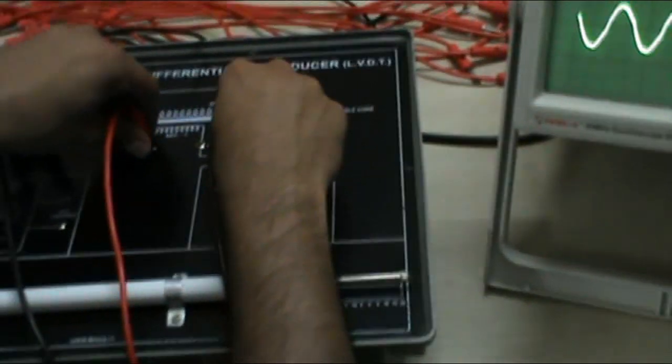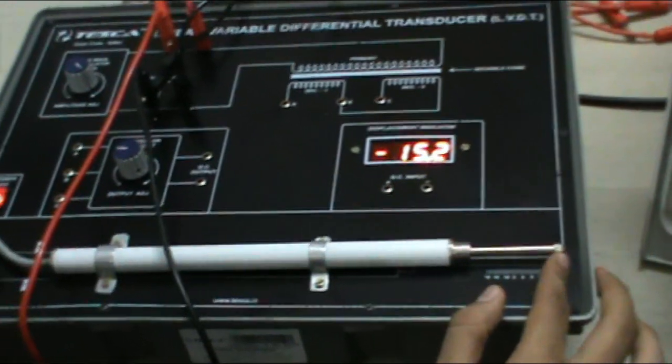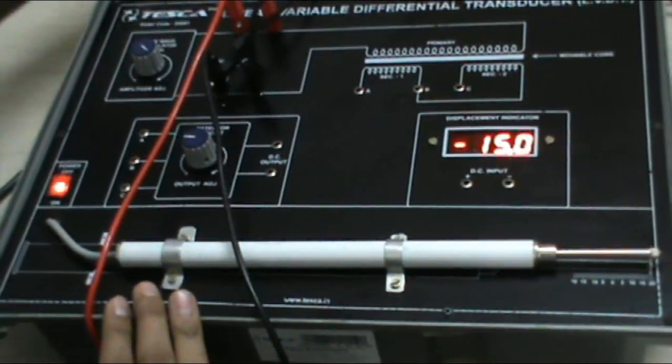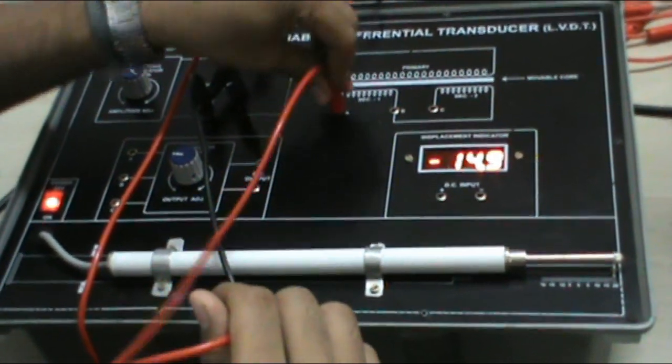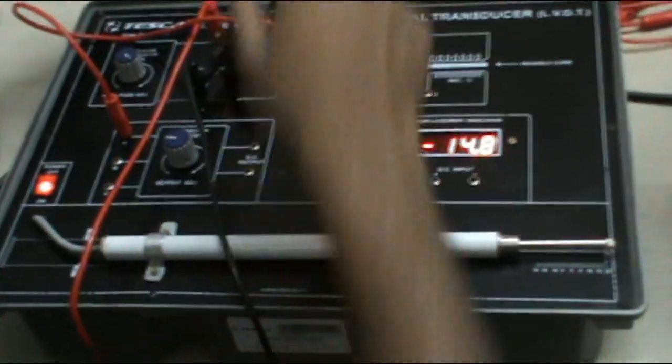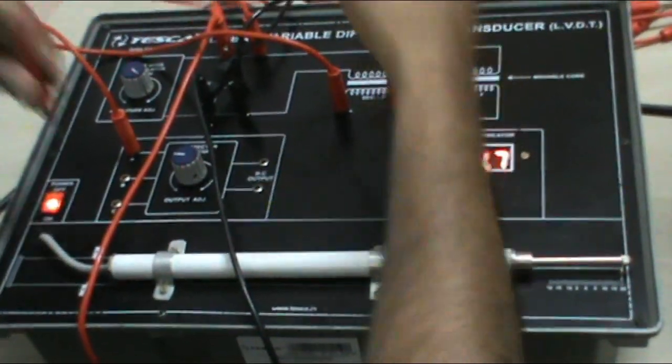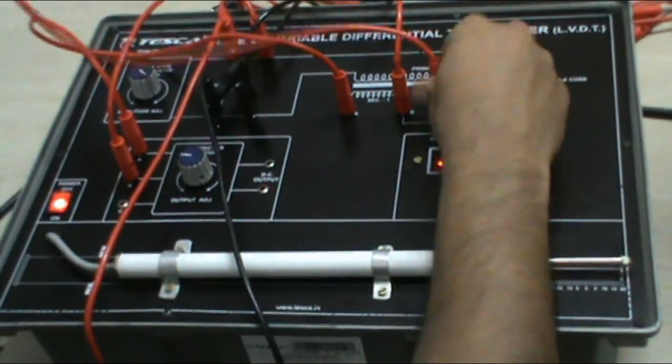Now in order to see the displacement function and how it works, first of all connect this LVDT output to the detector circuit. A to A, B to B, and C to C.